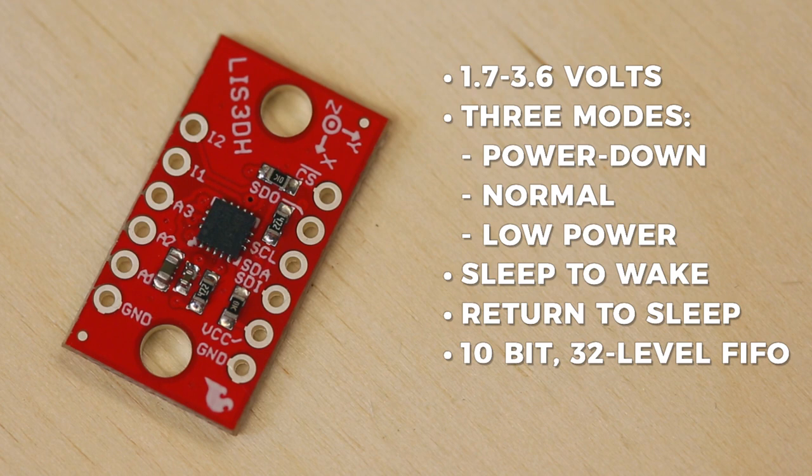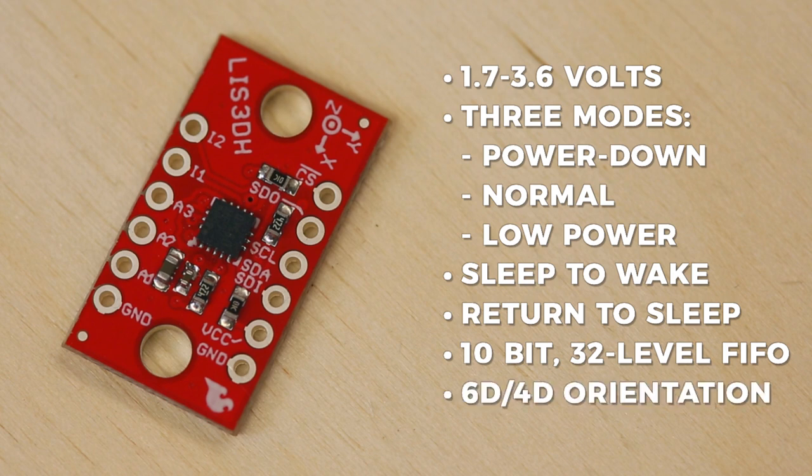The LIS-3DH includes 6D and 4D orientation detection, an advanced capability to detect the orientation of the device in space.